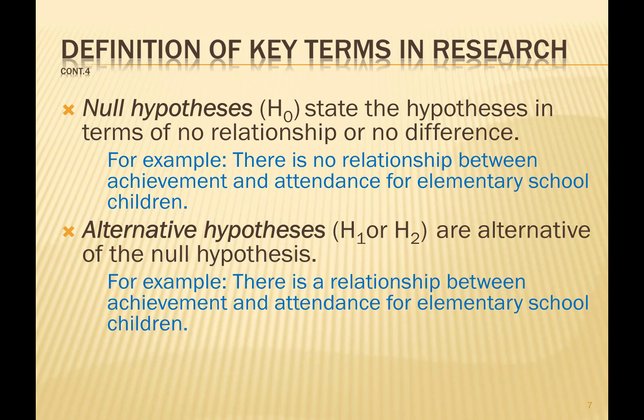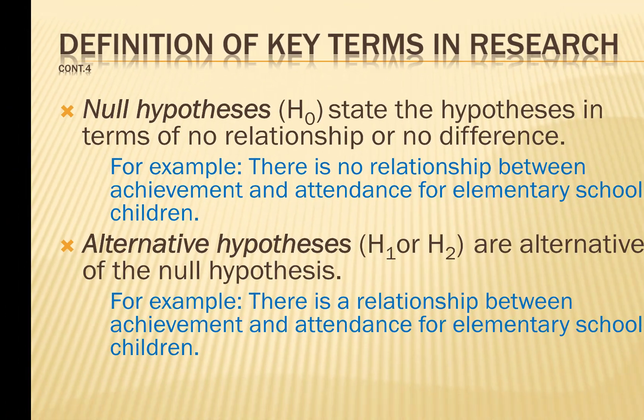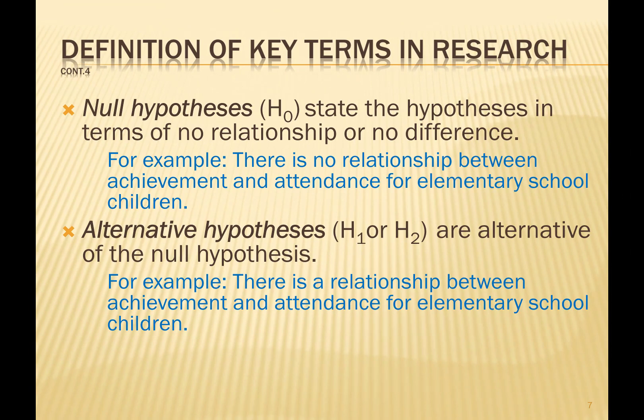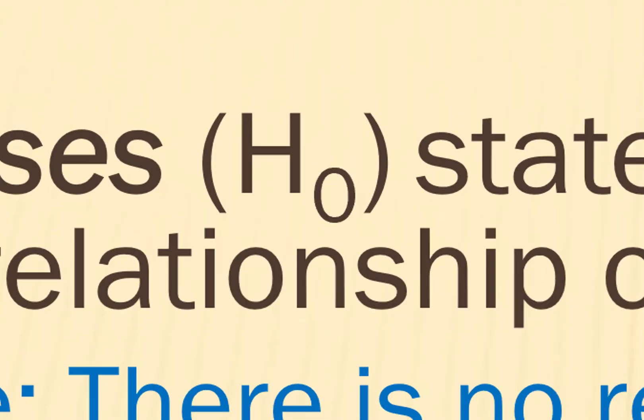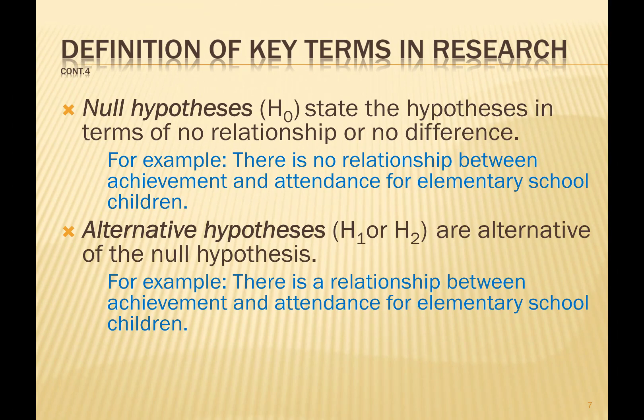When doing hypothesis testing, we always start out with a null hypothesis. The null hypothesis suggests that there is nothing — no relationship or no difference — and the symbol we use is H-zero (HO) for hypothesis null. For example, even if we know there is a relationship between achievement and attendance for elementary school children, a null hypothesis would say there is no relationship.